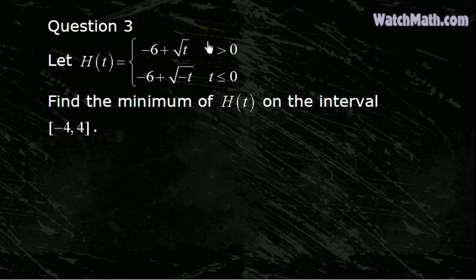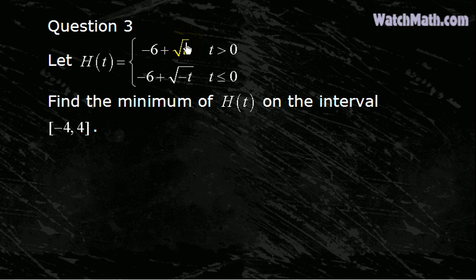By simple check we can see that this function is continuous. The only potential problem is when t equals 0, but we can easily check that when t equals 0 this is equal to negative 6, and this function also equals negative 6 when t equals 0. This means both pieces coincide at t equals 0, so h of t is continuous everywhere, and especially at t equals 0.